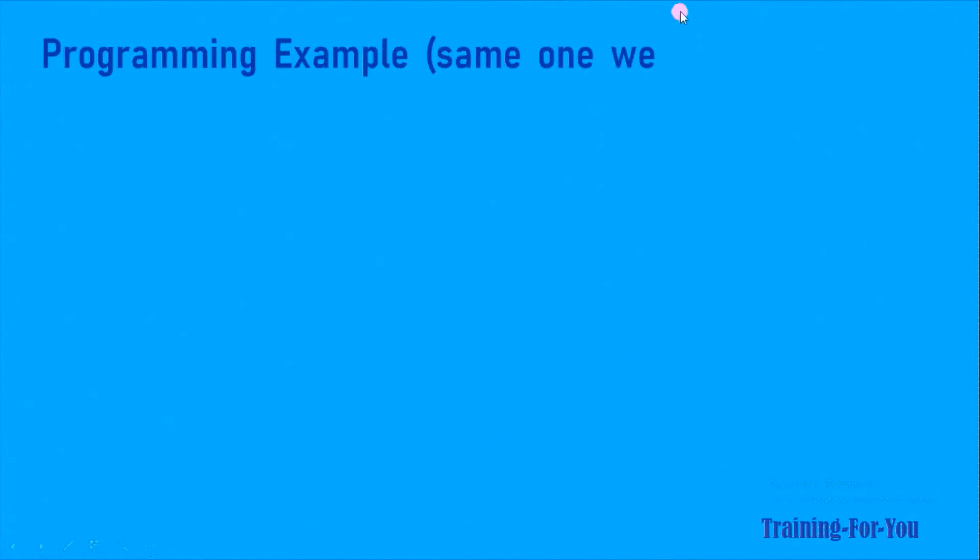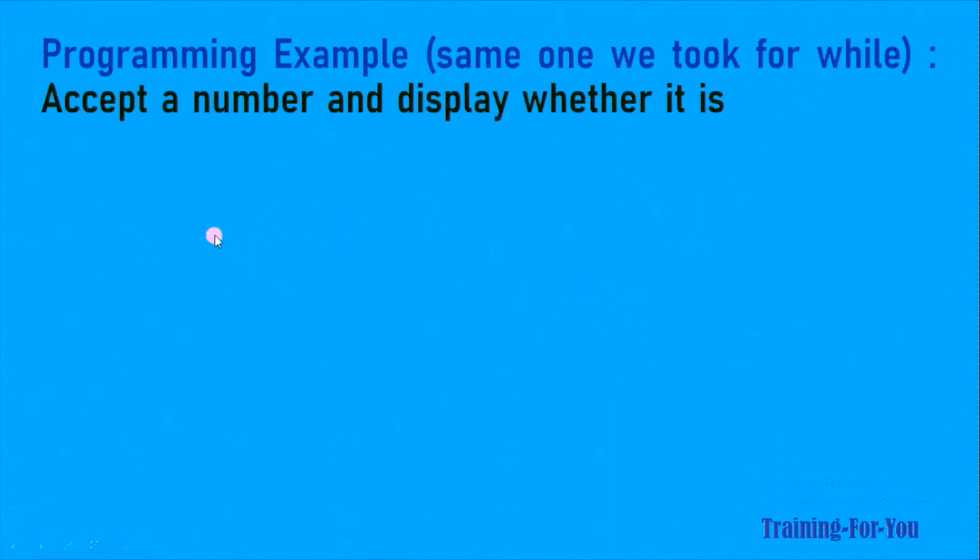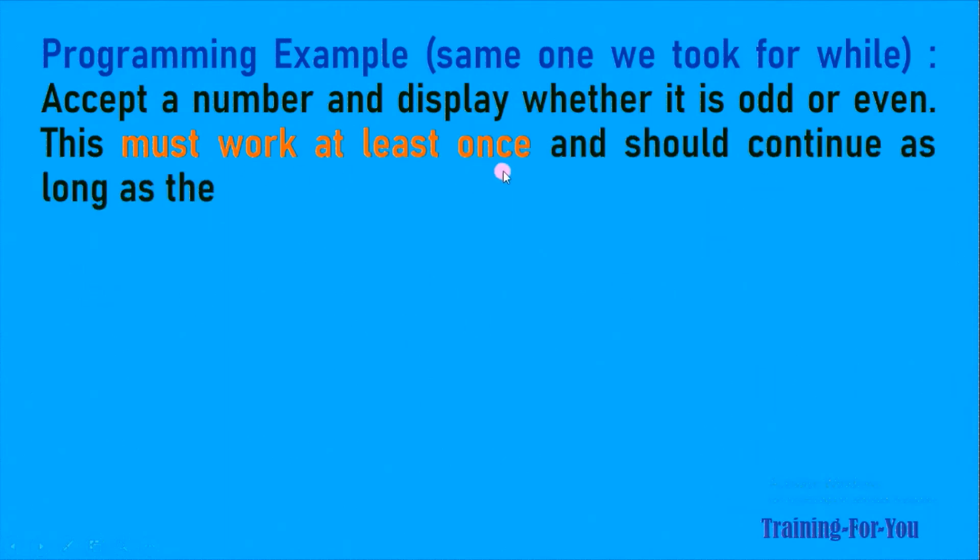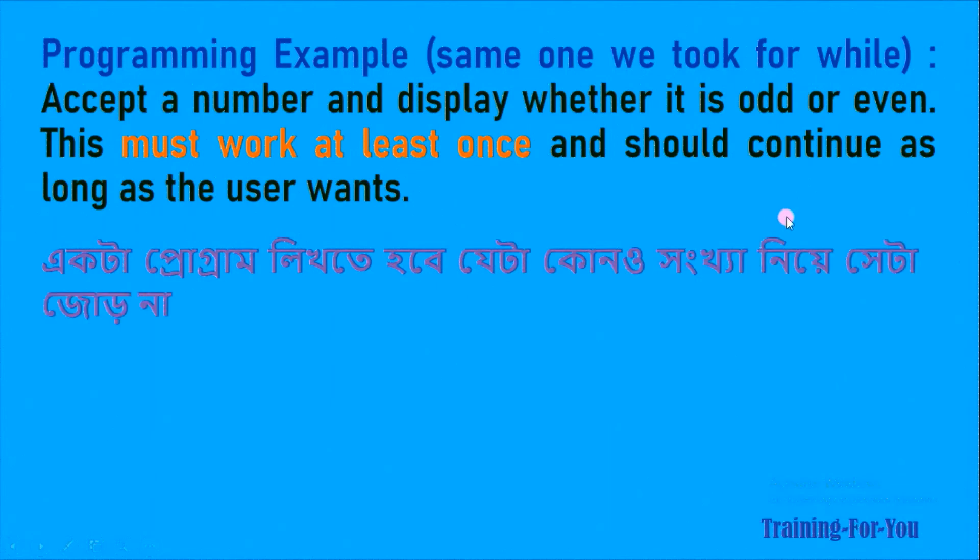Let's take a programming example. We will take the same one we took for while loop. Accept a number and display whether it is odd or even. Now this must work at least once and should continue as long as the user wants.